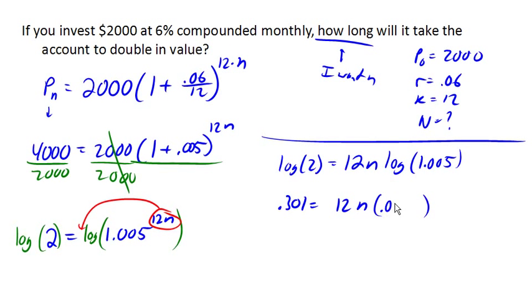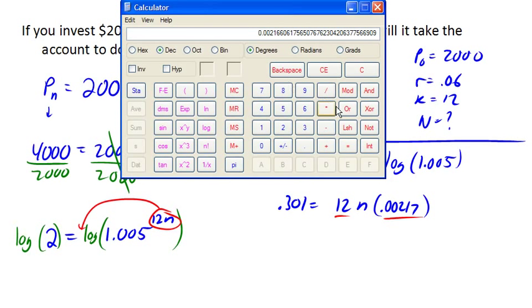Now, just for simplicity, I'm going to go ahead and multiply together my 12 and my 0.00217. And since I already have this in my calculator, I'm just going to say times 12, gives me 0.0260. 0.0260, okay.